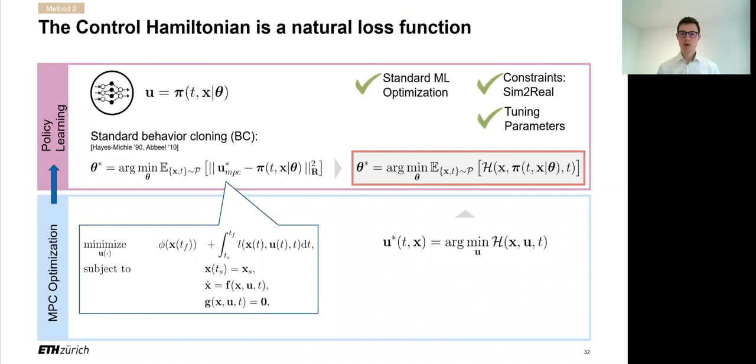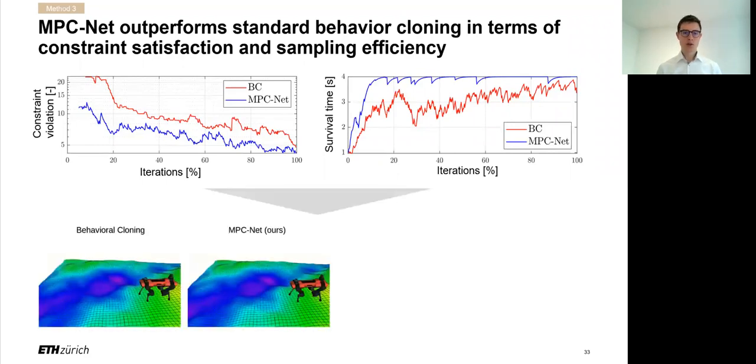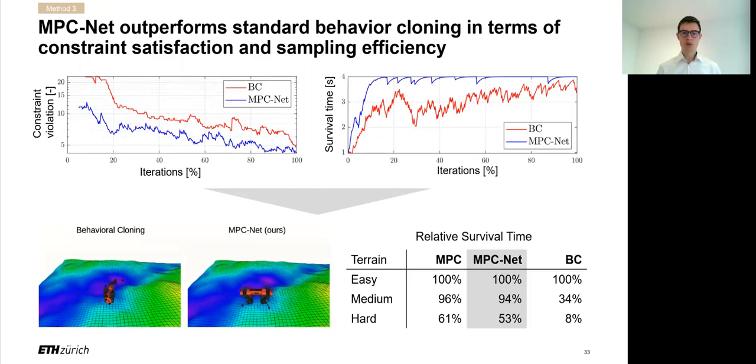That sounds theoretically nice, but let's compare it to the standard behavioral cloning benchmark. What we find is that the MPCnet approach is better in terms of constraint violation score and converges faster to a reliable survival rate. And this pays out in form of robustness when we subject both of those policies to unmodeled uneven ground. Also, looking at the numbers of many of those uneven grounds, we see that the survival rate of our MPCnet is close to the MPC teacher and vastly outperforms the behavioral cloning, especially on harder terrains.